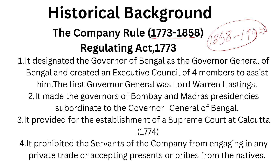Now let us understand what is the Regulating Act of 1773. The Regulating Act of 1773 is of great constitutional significance, and there are three reasons for this. First, the Regulating Act of 1773 enabled the British Government to control the East India Company's activities and affairs. Second, the East India Company's political functions and administrative functions were recognized. Third, it centralized administration based in India through the Regulating Act of 1773. Because of these three reasons, the Regulating Act of 1773 is considered to be of great constitutional significance.